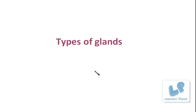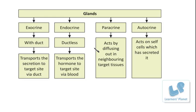Let us see what they are and briefly explain them. Glands can be, number one, exocrine or endocrine, then paracrine and autocrine. These are the major four categories. What do these terms mean? What are their functions, what type of secretion is there, and how are they classified?